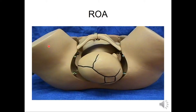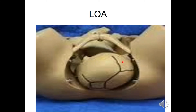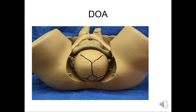As seen here, this is the occiput in right occipital anterior position, with the symphysis pubis shown. This is right occipital anterior, this is left occipital anterior, and this is direct occipital anterior.